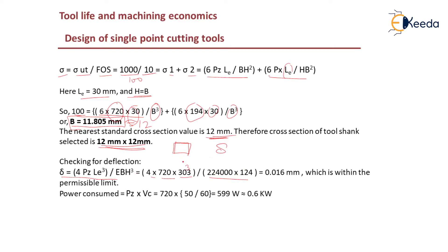This one is wrongly written, so this is 30 cubed. E is given as 224,000 times 124. If you substitute this and do the calculation you will get 0.016 mm which is within the permissible limit. The permissible limit should be within 0.04 mm for roughing operation and 0.1 mm for finishing operation.